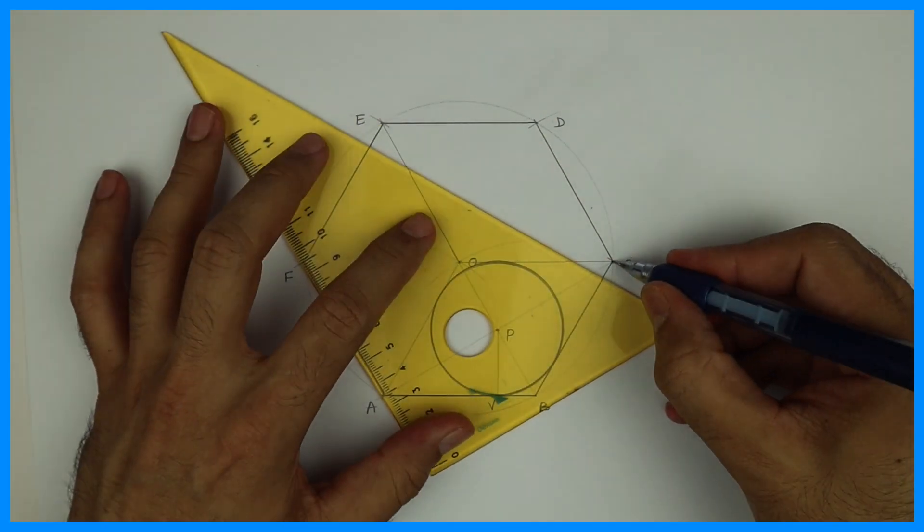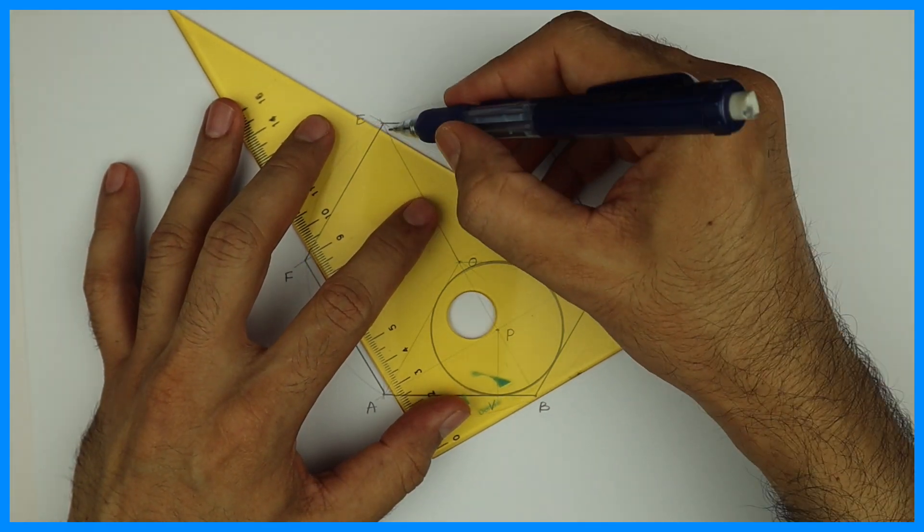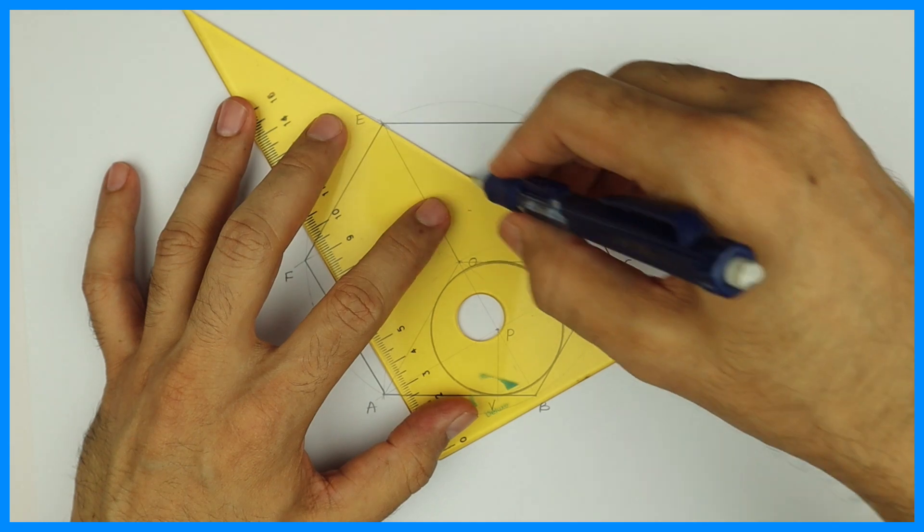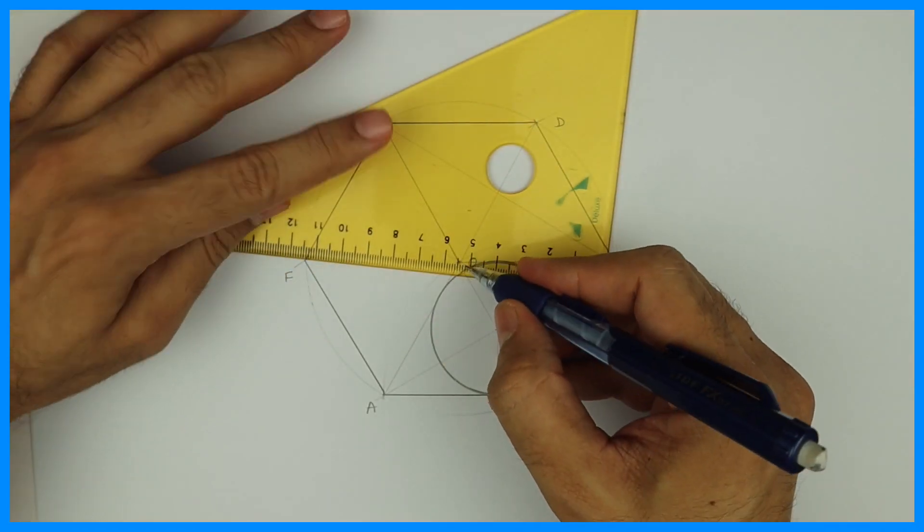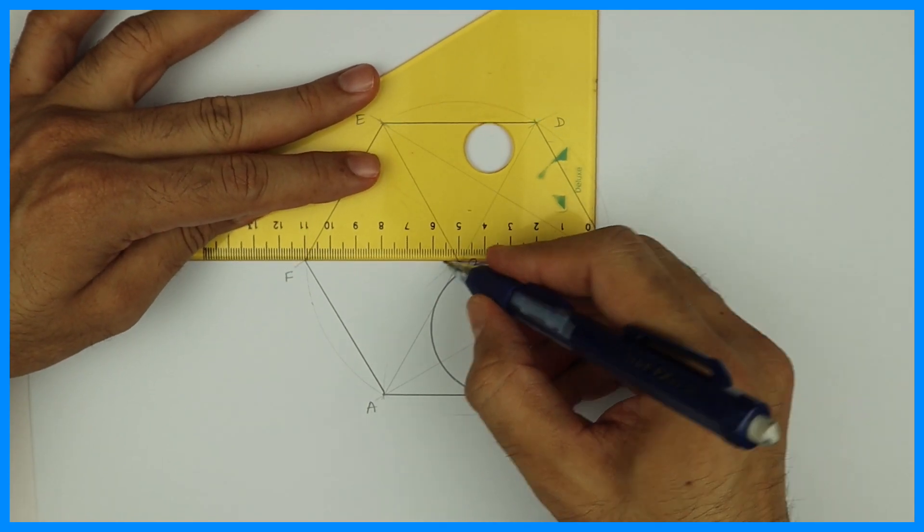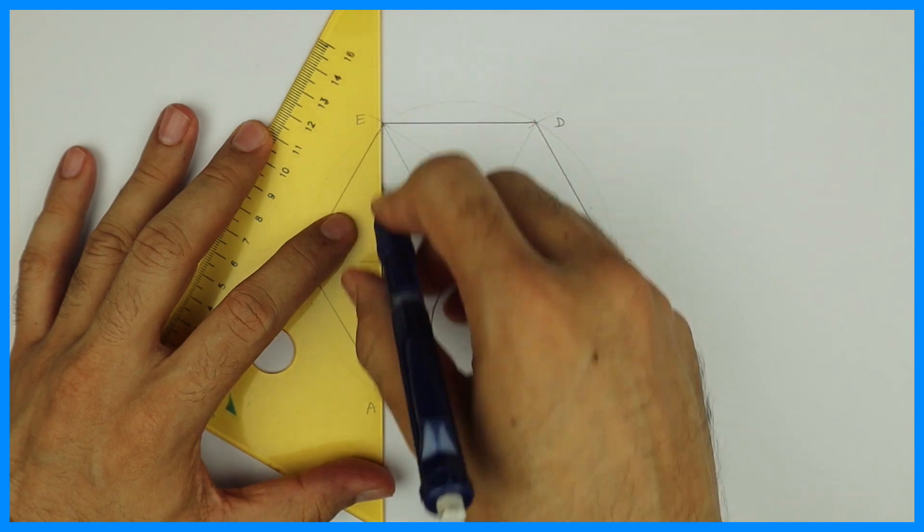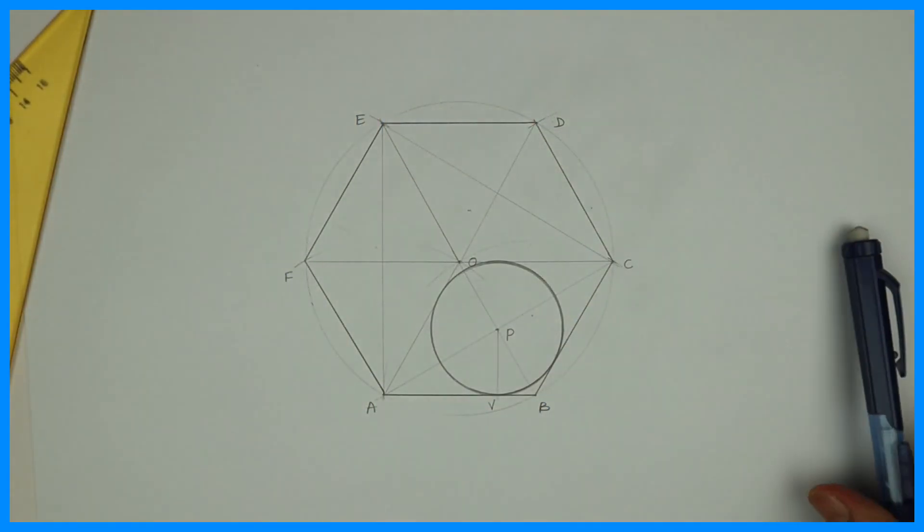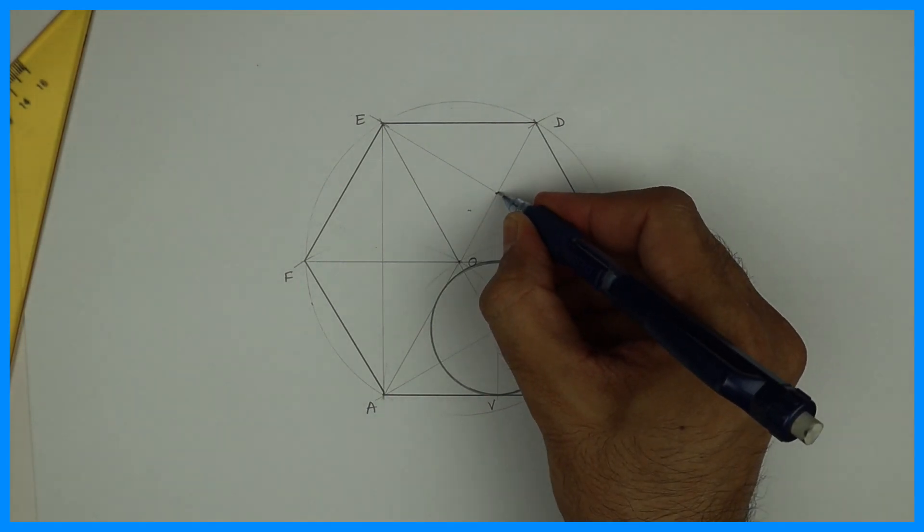In each respective part we are joining the diagonal. Now we are joining E to C and O to D. Again, O to F and A to E. By doing this you got two more center points. This is Q and R.